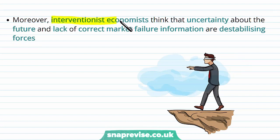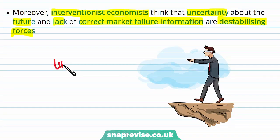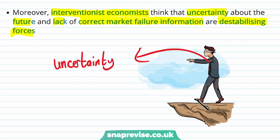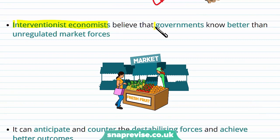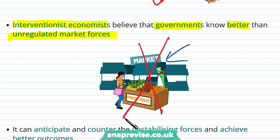Interventionist economists also think that uncertainty about the future and lack of correct market failure information are destabilizing forces. The idea that there is inherent uncertainty behind what businessmen are doing is essentially leading them toward not-so-great outcomes. Interventionist economists believe that governments know better than unregulated market forces — whereas pro-free market economists argued the market knows best because they are more closely aligned to it, interventionists believe the government can make a better decision than the market would.